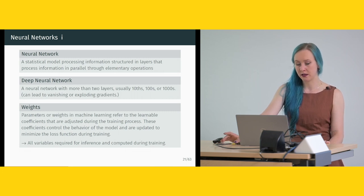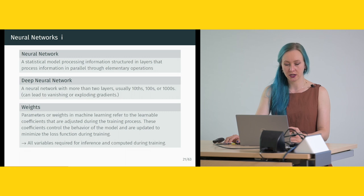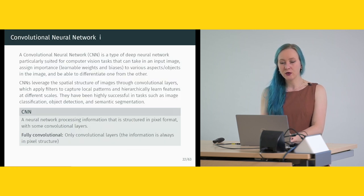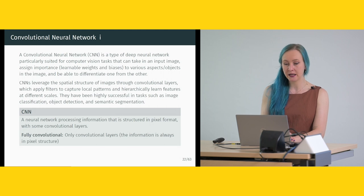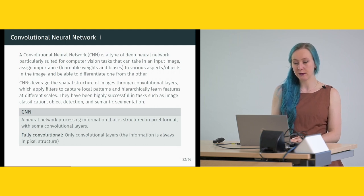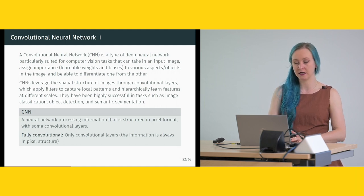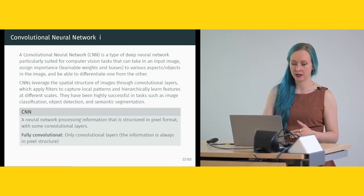Parameters or weights in machine learning are learnable coefficients adjusted during the training process. They control the behavior of the model and are updated to minimize the loss function during training. A convolutional neural network (CNN) is a type of deep neural network particularly suited for computer vision tasks. It takes an input image, assigns learnable weights and biases to various objects, and differentiates one from another. CNNs leverage the spatial structure of images through convolutional layers that apply filters to capture local patterns and hierarchically learn features at different scales. They are highly successful at image classification, object detection, and semantic segmentation.